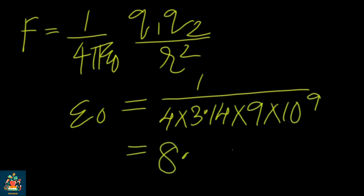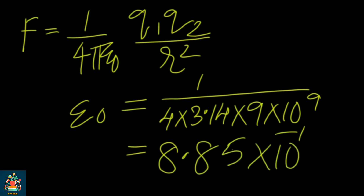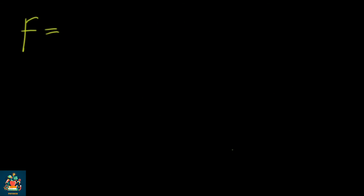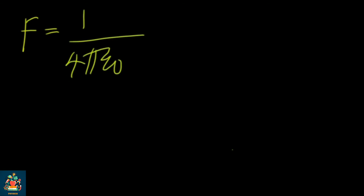This is the value of epsilon zero. Now, we will determine the value of epsilon zero using Coulomb's law: F is equal to 1 by 4 pi epsilon zero, multiplied by q1 q2 divided by r square.